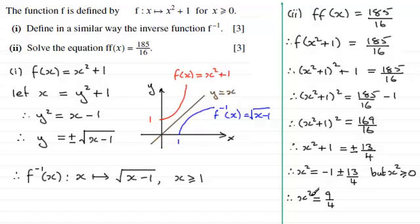And again, if I square root both sides, then it follows from this that x would be equal to plus or minus 3 over 2. But x has to be greater than or equal to 0. So therefore, x must be equal to 3 over 2.